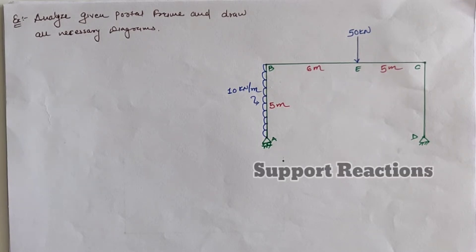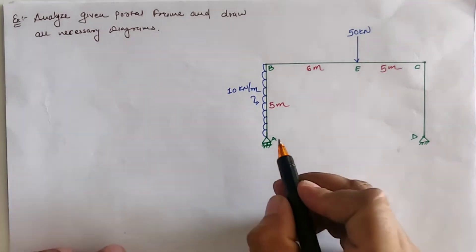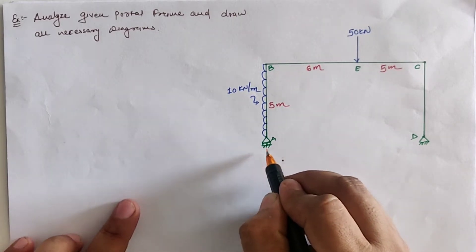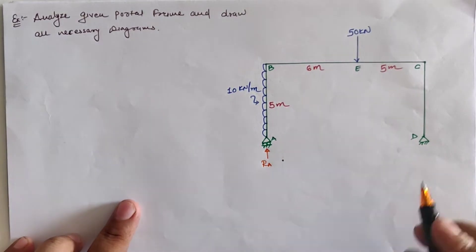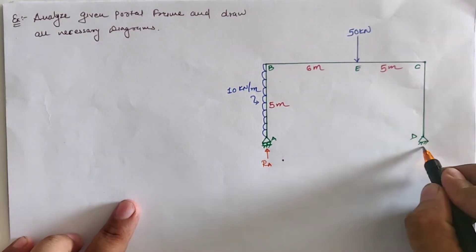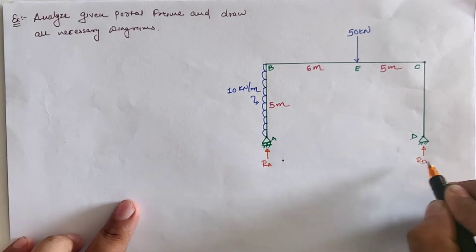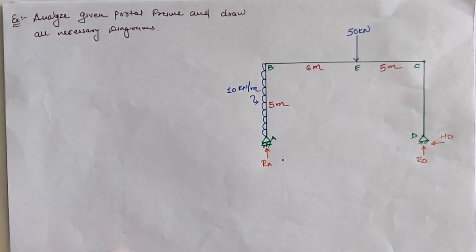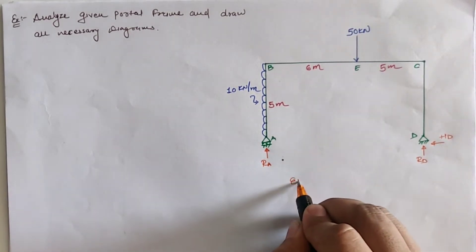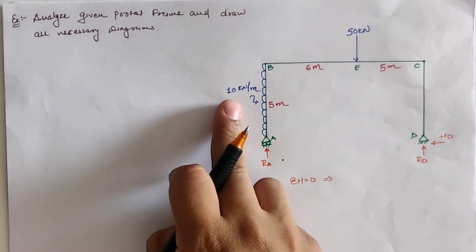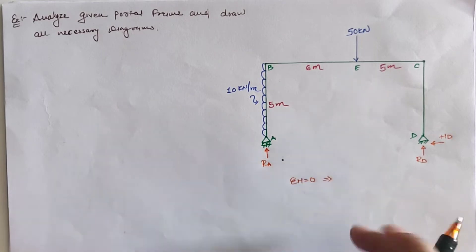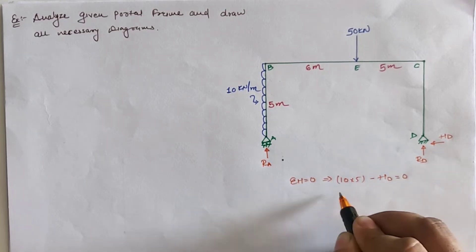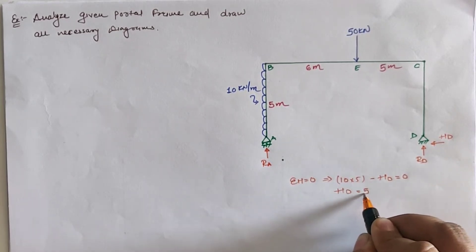For the calculation of all these values, we first have to calculate the support reactions. At point A there is a roller support which creates a vertical reaction RA. Due to the hinge support at D, vertical reaction is RD and horizontal reaction is HD. Using sigma H = 0: 10 × 5 in the positive direction minus HD equals zero, giving HD = 50 kN.